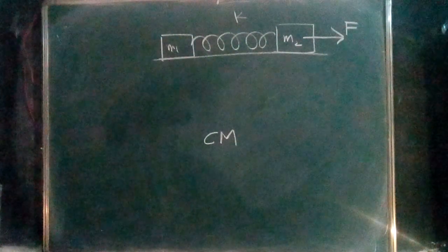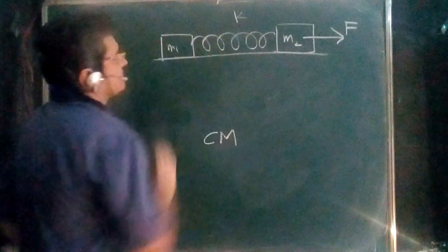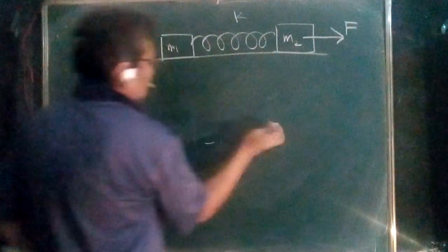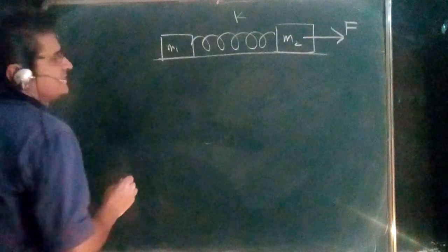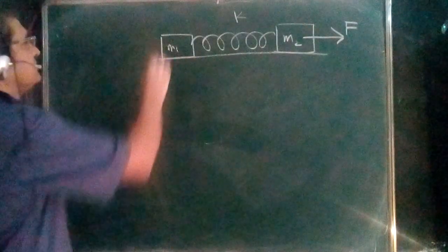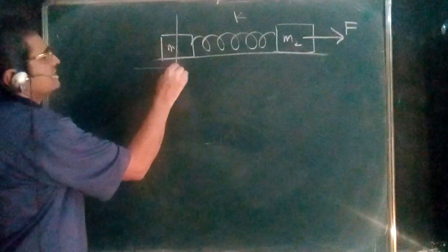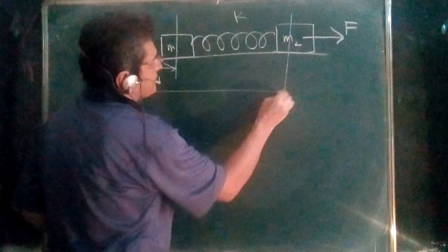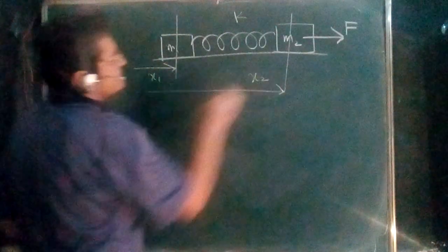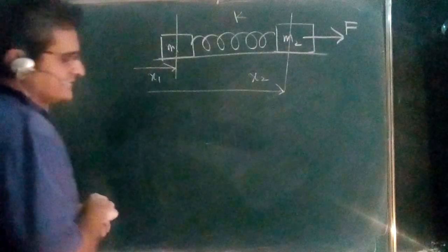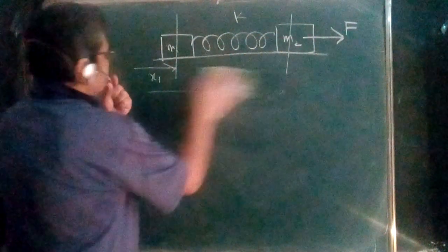This is a useful problem on center of mass. We are given two masses connected by a spring with spring constant K, and mass m2 is being pulled by a force F. We have to find the maximum extension in the spring. There are two methods — one is the lengthier method where you take x1 and x2 as coordinates, write the differential equation, and apply initial conditions.